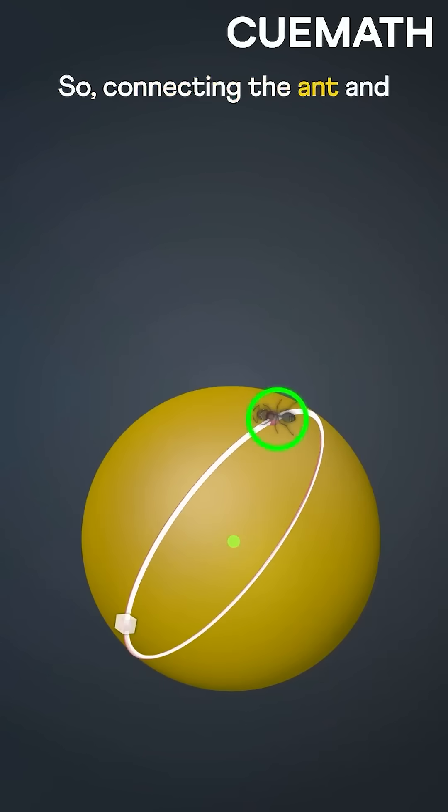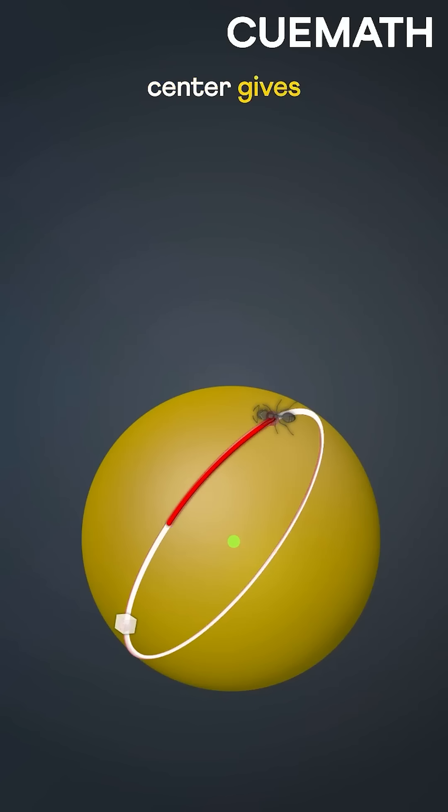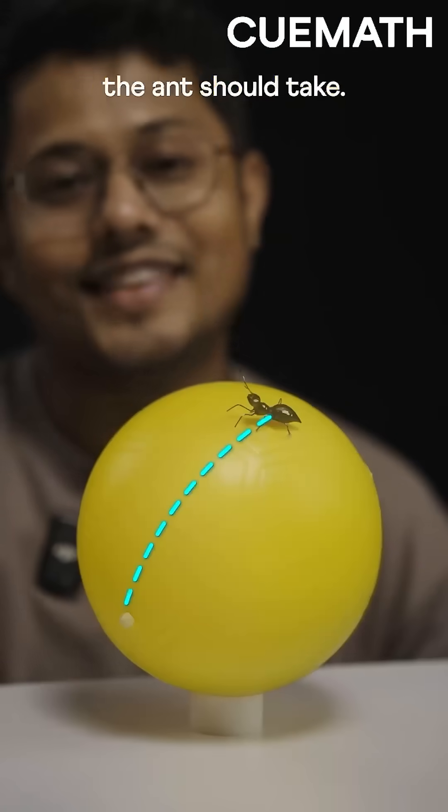So, connecting the ant and the sugar with the circle that shares the sphere's center gives the shortest path. Hence, this is the shortest path the ant should take.